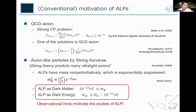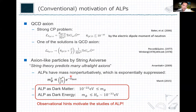Later, string theorists found something similar to the axion. String theory predicts many ultralight axions, sometimes called the string axiverse. In string theory, the mass of the axion-like particle is given by a dimensional parameter exponentially suppressed by the instanton action. This exponential suppression can be very large, so the mass can be extremely small — it's quite natural to have an extremely light field in the context of string theory.